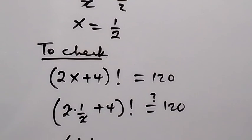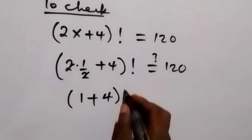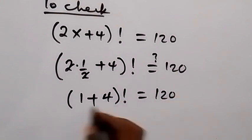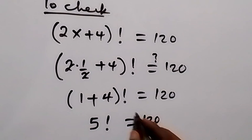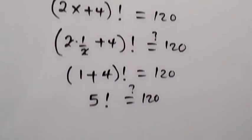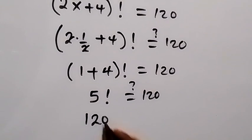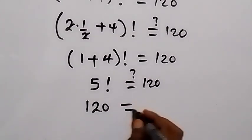1 plus 4 is 5, which is 5 factorial equals to 120. When we look at what we have, 5 factorial is 120. We have 5×4×3×2×1, that's 120, and here equals to 120.